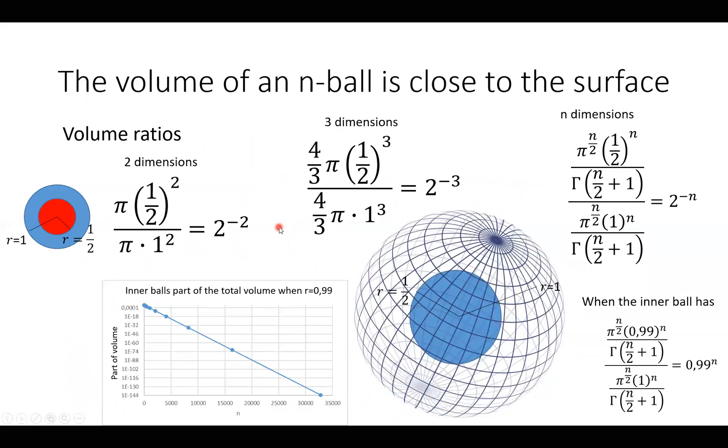And then we are going to look at the volume of an n-ball because we need that in the geometrical derivation of Shannon's formula. If we look at the 2-ball and look at the volume ratios between this one having a radius of 1 and this red one having a radius of a half. This is the area of the innermost and this is the area of the outermost. And we see that the ratio is 1/4.